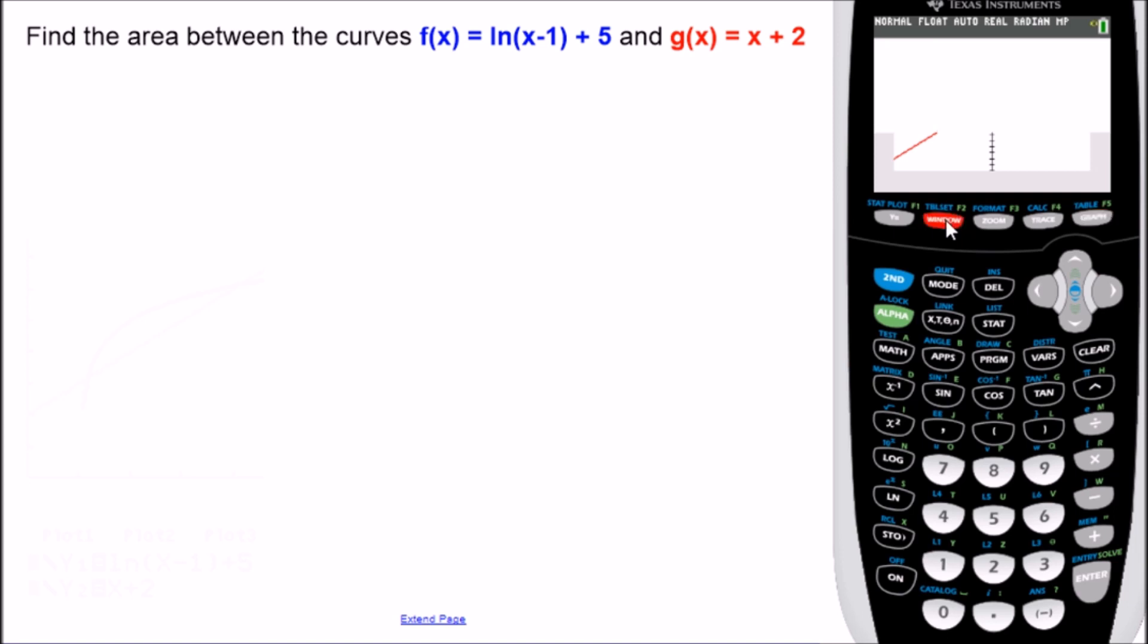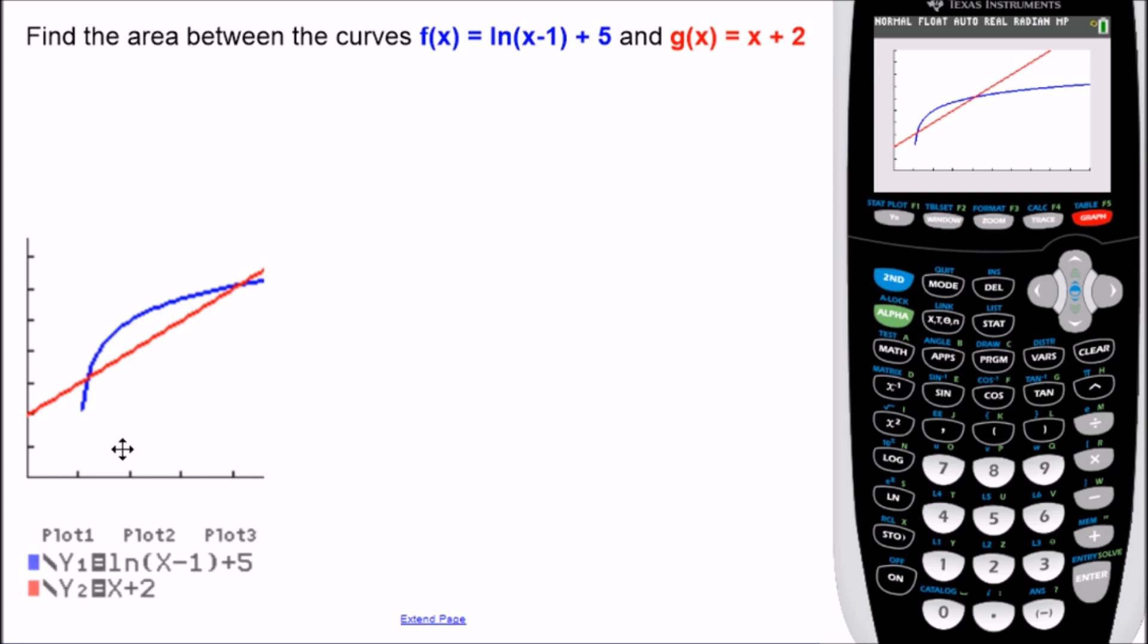So one thing that you could do to make the rest of this easier is make the x minimum 0, leave the x maximum 10, and we can adjust the window for the y values to go from y minimum 0 to y max 10. And what this does is it'll put all the focus in quadrant 1 where everything is happening. So a zoomed in picture here shows us what our graph looks like.